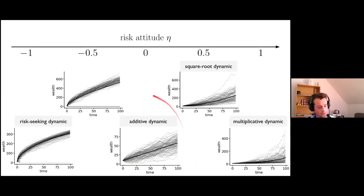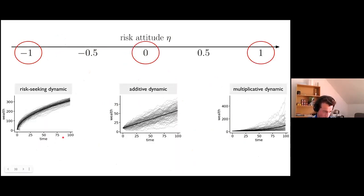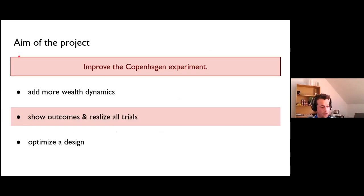The nicest thing about the isoelastic is that we can recover the two cases that we previously had in the Copenhagen experiment, meaning the additive dynamic for zero risk attitude and multiplicative for one. We can also get something in between those two. We can get a whole range of different risk-seeking dynamics for negative values of this parameter. Because we all like symmetry and we wanted at least one dynamic which encourages risk-seeking behavior, we chose for the final experiment these three. We added new risk-seeking dynamics for this parameter.